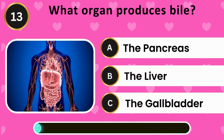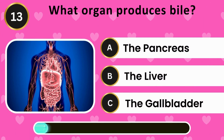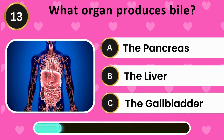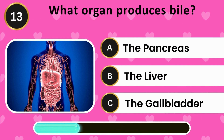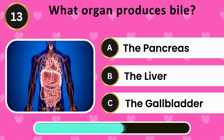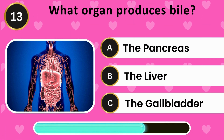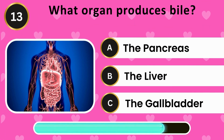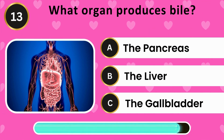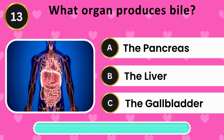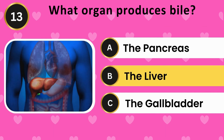What organ produces bile? The pancreas, the liver, the gallbladder. The answer is the liver.